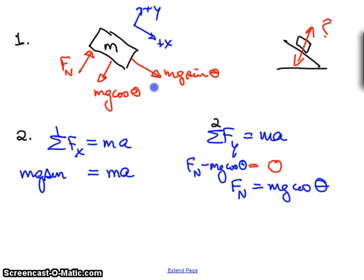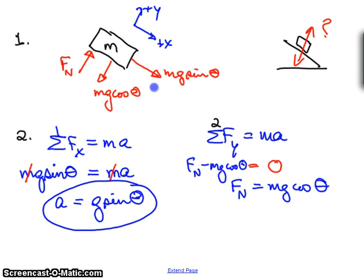What do you notice about that equation? mg sine theta equals ma. Well, the mass is canceled, interestingly enough. And our solution is just a equals g times the sine of theta.